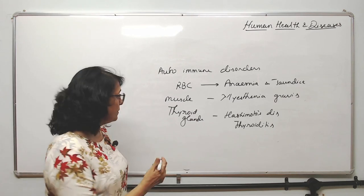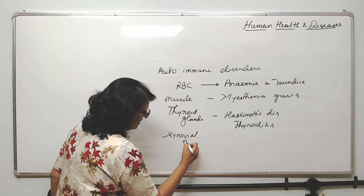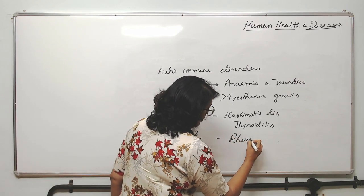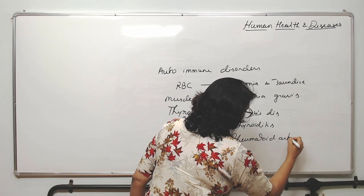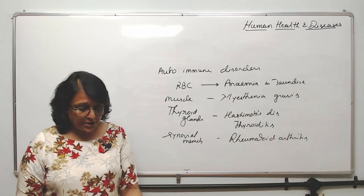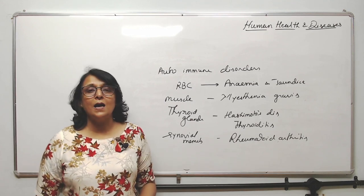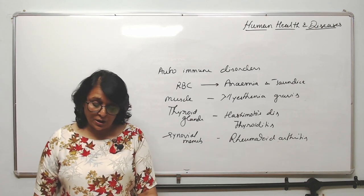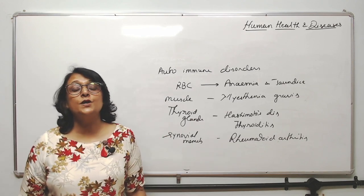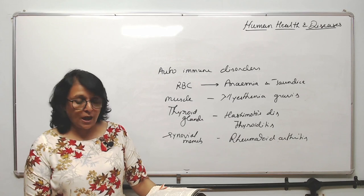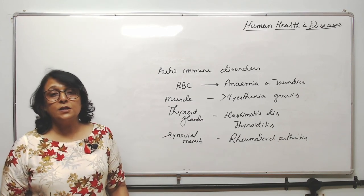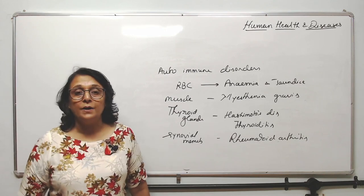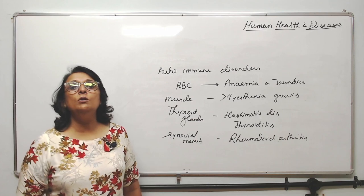If our synovial membrane becomes antigenic, the disease caused is known as rheumatoid arthritis. There is also lupus, a disease where the cells of our skin become antigenic. Multiple sclerosis is also an autoimmune disorder — in multiple sclerosis, the myelin sheath on the nerve fibre becomes antigenic. So these are all autoimmune disorders.